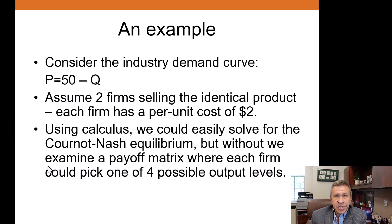But what is this model? What is this market? Let's assume there's an industry demand curve. Price equals 50 minus the quantity. So each unit produced decreases the price by a dollar. Two firms selling the identical product in this duopoly. They're competing by setting prices, and they've got to make the assumption on what the other firm is doing. Each firm has a per unit cost of $2.